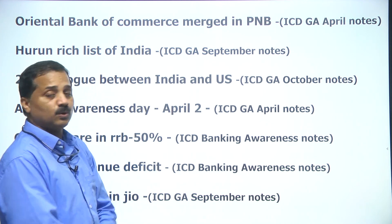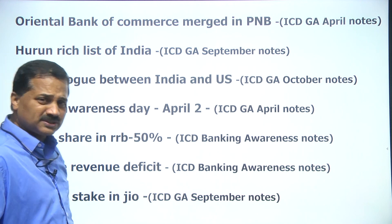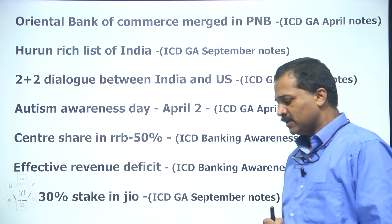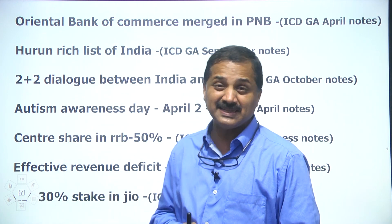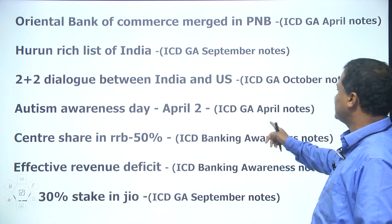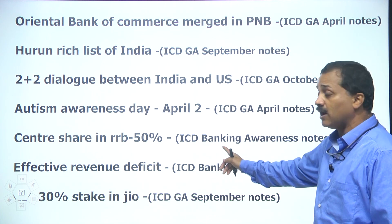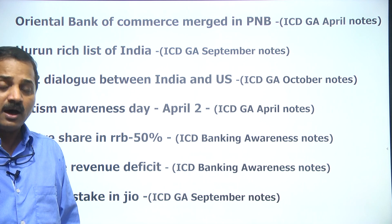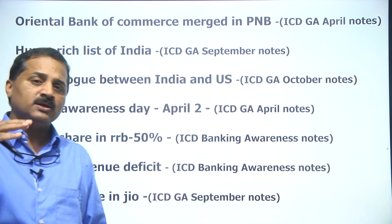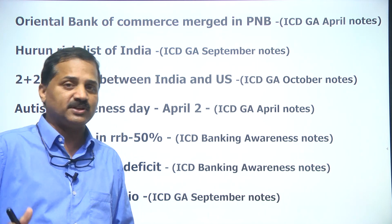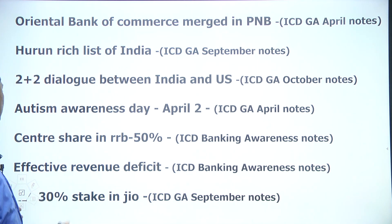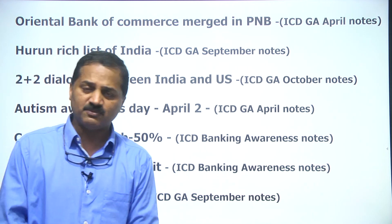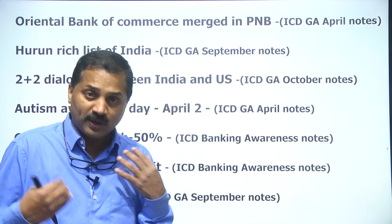Hurun Rich List of India — ICDG notes. 2+2 dialogue — conducted very recently, where the defense and foreign ministers of India and the United States of America met in Delhi. Autism Awareness Day — April notes. Centre's share in RRBs is 50 percent — that is in my banking awareness notes. RRBs are constituted by the central government, the state government, and participatory or sponsor banks. Effective Revenue Deficit — in ICD's banking awareness notes. Revenue deficit comes when your revenue expenditure is more than revenue income.